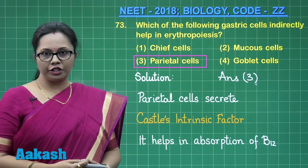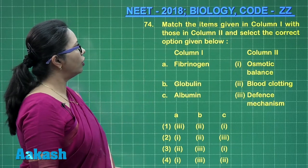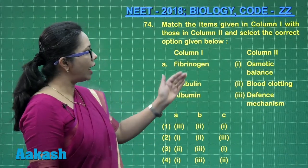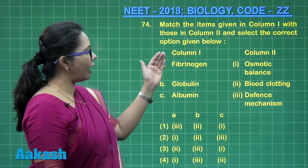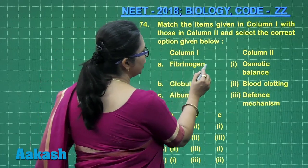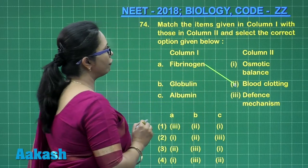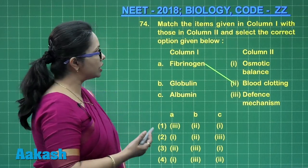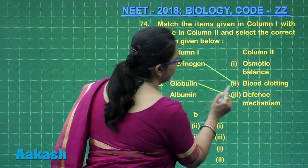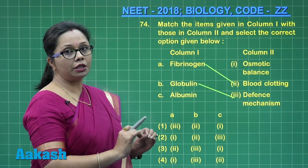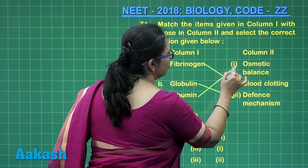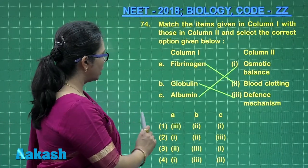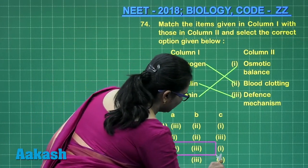Moving on to question 74, a match-the-column type question where one column lists components of blood plasma and the other lists their functions. Fibrinogen is the blood clotting protein, converted to fibrin during clotting. Globulins are of three types — alpha, beta, and gamma — but gamma globulins are responsible for the defense mechanism as they are antibodies. Albumin, the most abundant plasma protein, maintains osmotic balance and blood colloidal osmotic pressure. The correct answer is option 3.